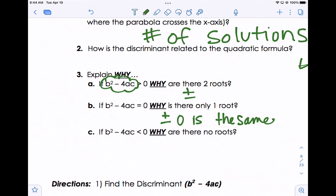And then if the discriminant is negative, why are there no roots? And the reason is, you can't take the square root of a negative number.